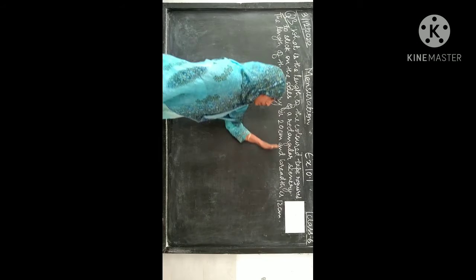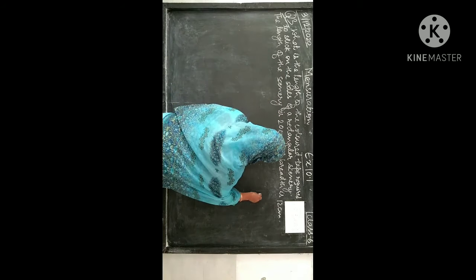Okay, so question number 3 is: what is the length of the color tape required to stick on the sides of a rectangular scenery? The length of the scenery is 20 centimeters and breadth is 12 centimeters.